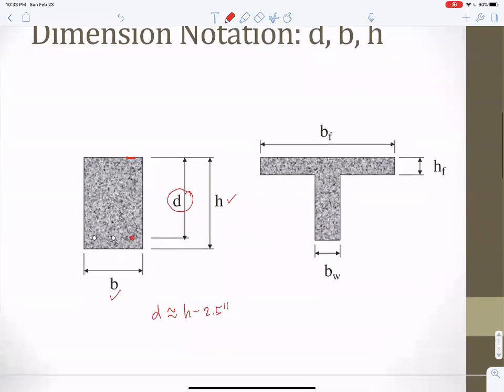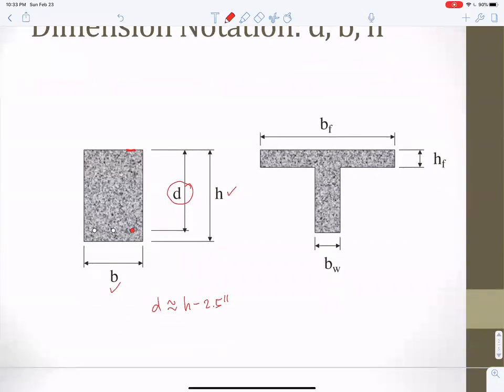If you have a T-beam, you'll have two different widths and two different heights. The width of the flange is called B flange, and the width of the web is called B web, B sub F, B sub W. This is still H, but the thickness of the slab I'm going to call H F for H of the flange.